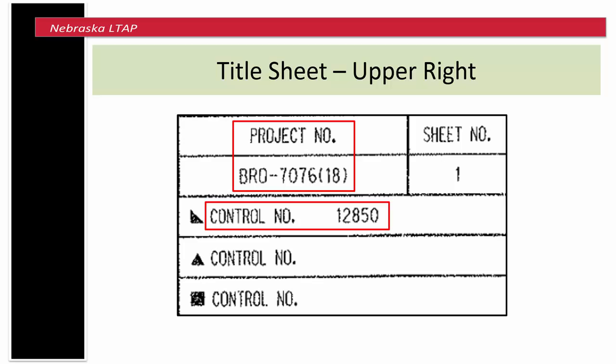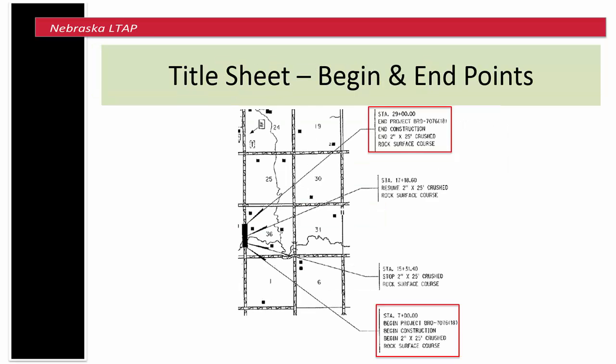In the upper right you will find a table which gives you the project number and control number. In the center of the sheet you will find the location map. On the right side of the map are general notes with station numbers. The project begins at station 7 plus 00 and ends at station 29 plus 00. From that information you can get the total length of the project.